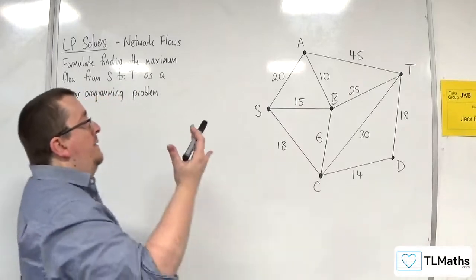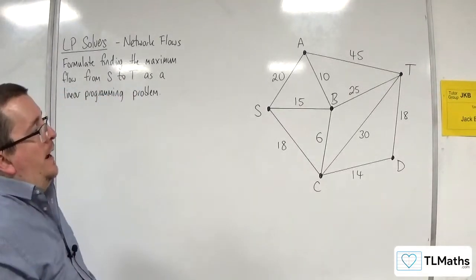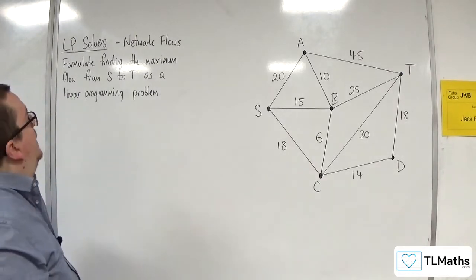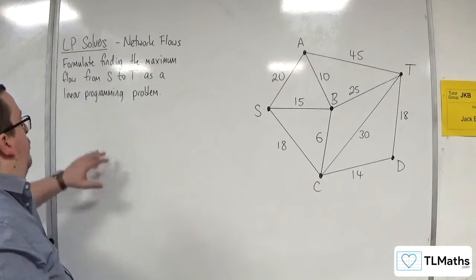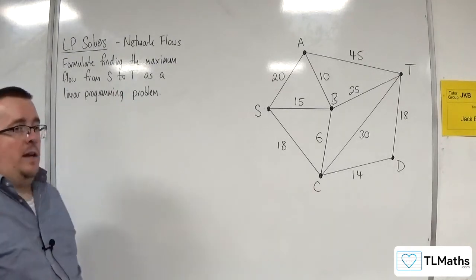In this video, we have a network where the weights represent the capacities of flow through each of those edges, and we want to formulate finding the maximum flow from S to T as a linear programming problem.